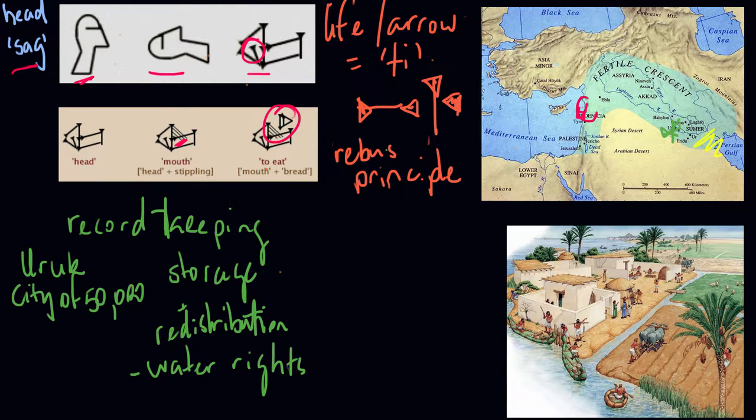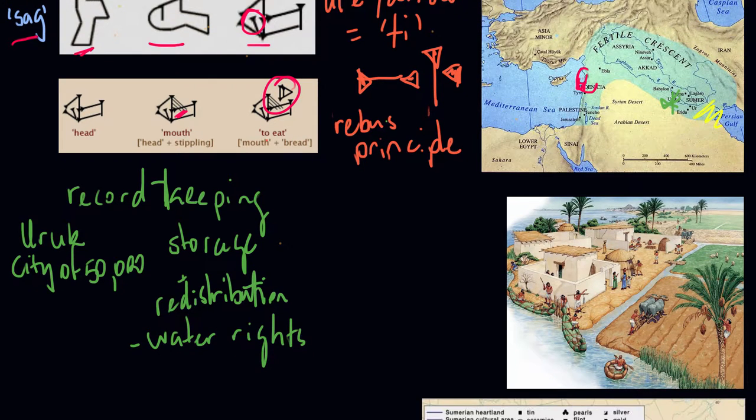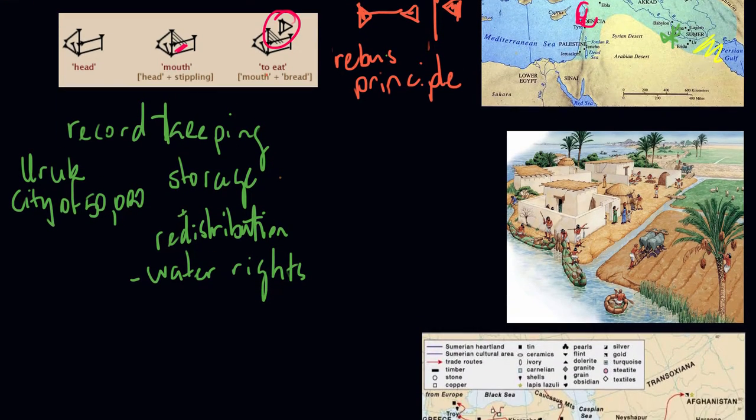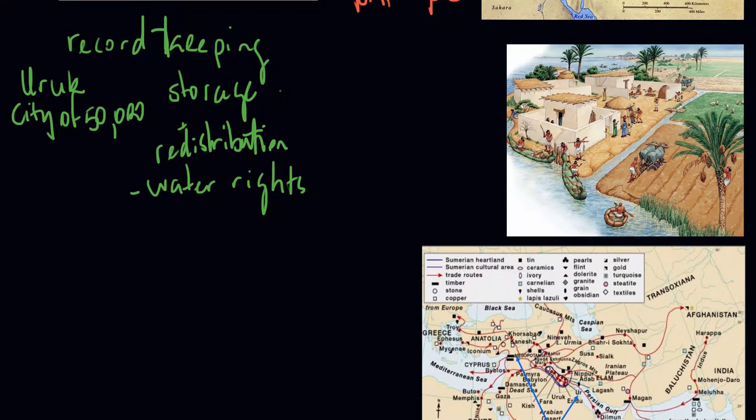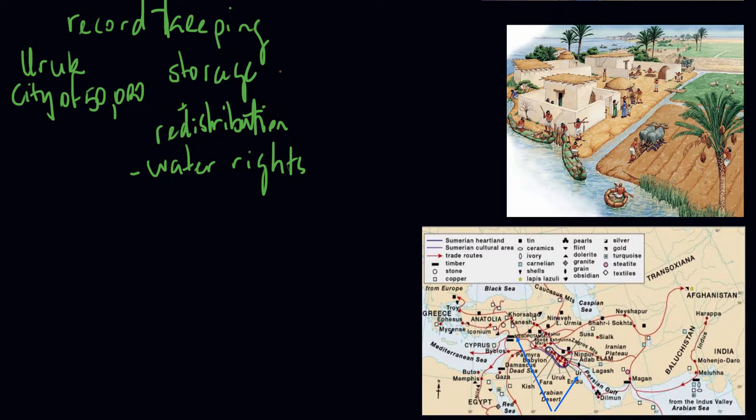Thirdly, Uruk is part of a really extensive trade network. It extends all the way to modern Afghanistan in the east, where lapis lazuli was imported from, to Lebanon in the west, where cedar wood was imported from, and even further west.